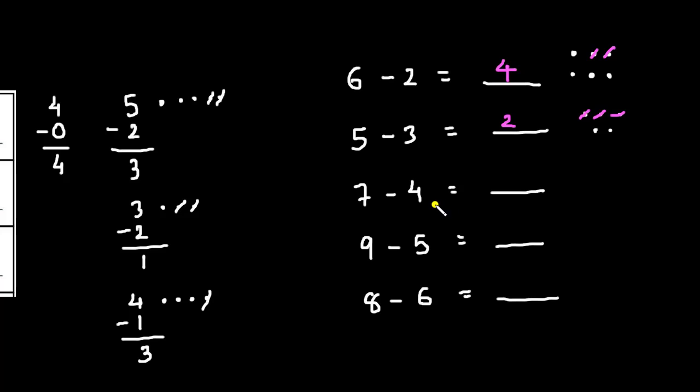7 minus 4. So, 1, 2, 3, 4, 5, 6, 7 and now cut 4 dots from here. 1, 2, 3, 4. So, we are left with 3 dots.